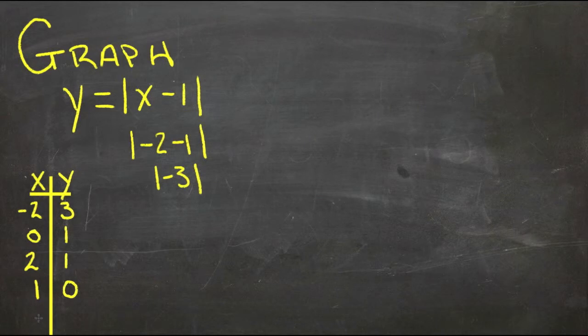Let's try one more. Let's try x is 3. If x is 3, we get 3 minus 1, that's 2, and the absolute value of 2 is 2. So when x is 3, y is 2.